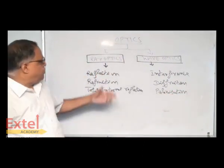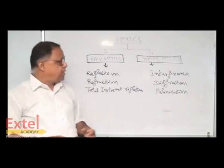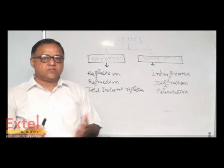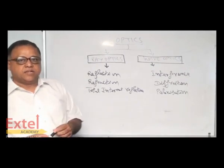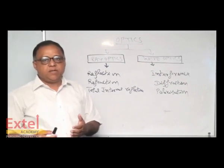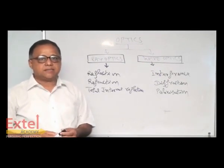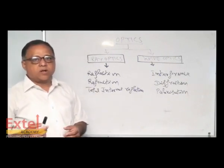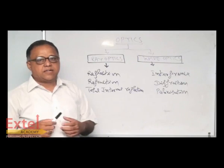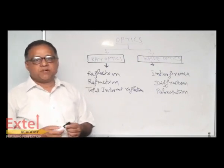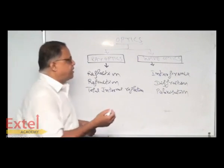Today we are going to discuss ray optics and why there is a difference between ray optics and wave optics. In ray optics we are talking about the medium. One is rarer medium, another is called denser medium. An example for rarer medium is air. Examples for denser medium are water and glass.